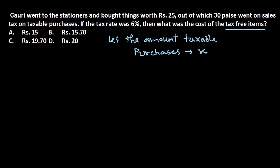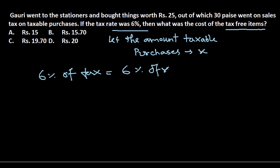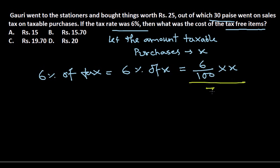We know that if the tax rate was six percent, the taxable amount purchased has value X. So six percent of X equals six divided by one hundred, multiplied by X. This is going to be the tax value, and this value is given as 30 paise.